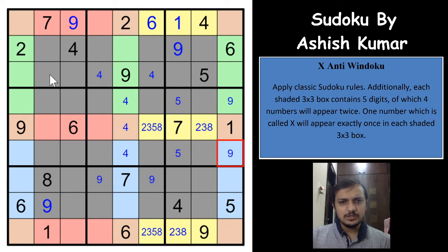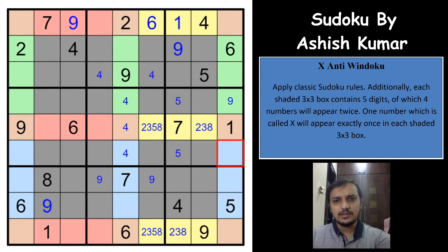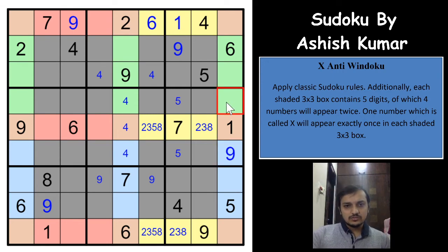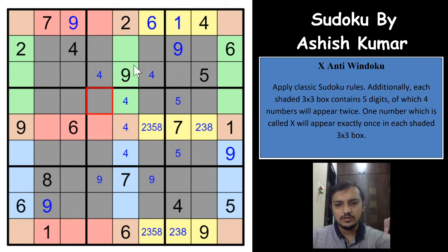If you see the blue region — where can 9 come in the blue region? A 9 must appear there. A 9 cannot be here or here because of these two 9s, so 9 has to be in one of these 2 cells. Because of the 9 here, a 9 has to be here. Then a 9 has to be in one of these 2 cells in this box.